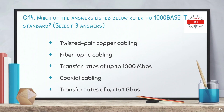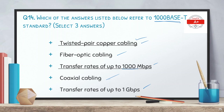Question 14: which of the answers listed below refer to the 1000Base-T standard? Select three answers. Options are twisted pair copper cabling, fiber optic cabling, transfer rate of up to 1000 Mbps, coaxial cabling, or transfer rate of up to 1 Gbps. The correct answers are: twisted pair copper cabling, transfer rate of 1000 Mbps, and transfer rate of 1 Gbps — because 1000 Mbps equals 1 Gbps.